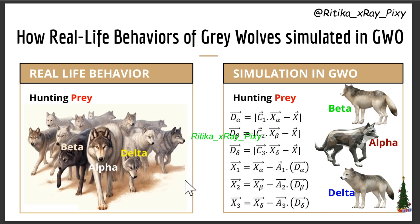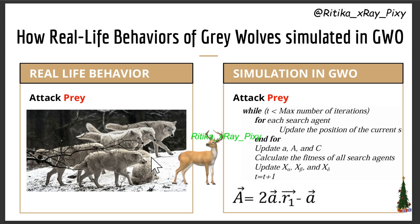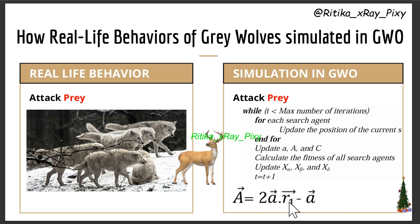Next point: hunting prey. In real life, during hunting, the alpha, beta, and delta wolves lead the pack. Same in this algorithm — we update all wolves' positions based on alpha, beta, and delta solutions using mathematical models. Next point: attack prey. In real life, as the hunting process progresses, all wolves slowly and strategically move closer to the prey. Same in this algorithm, we follow an iterative process and use vector A coefficient, which linearly decreases over time in each iteration. This reduces the wolves' exploration so they focus on exploitation.